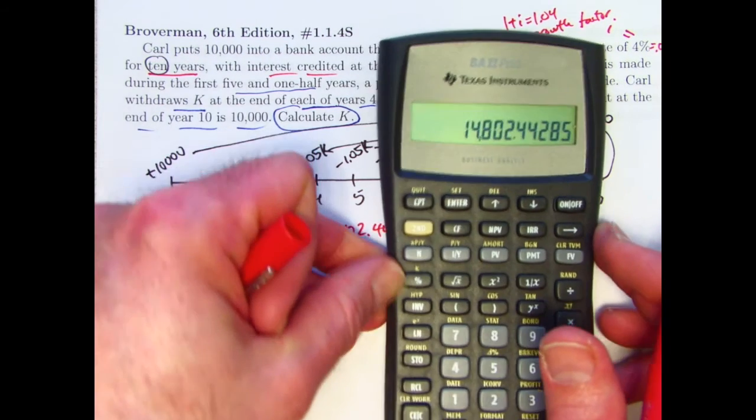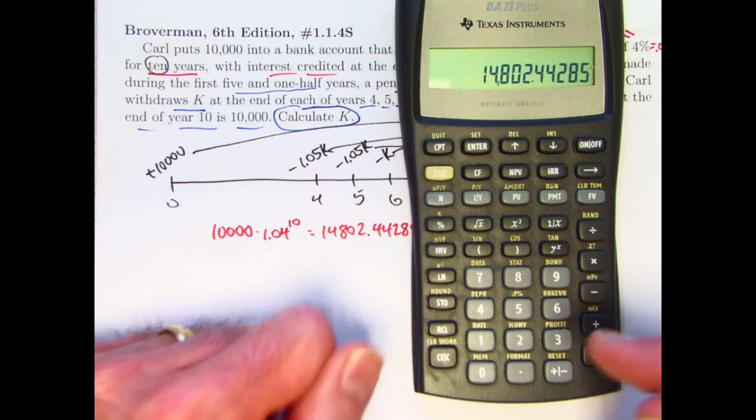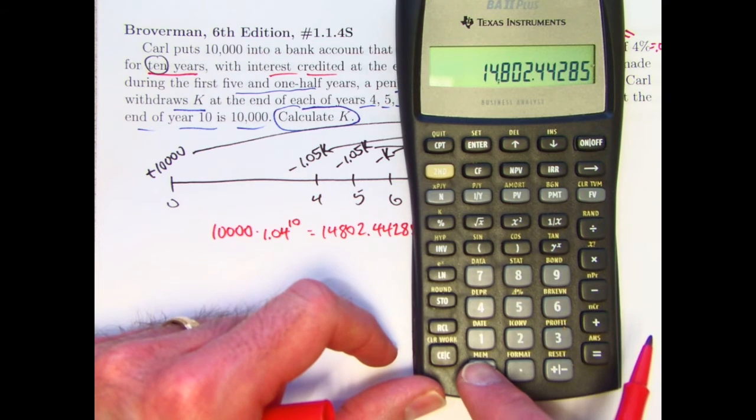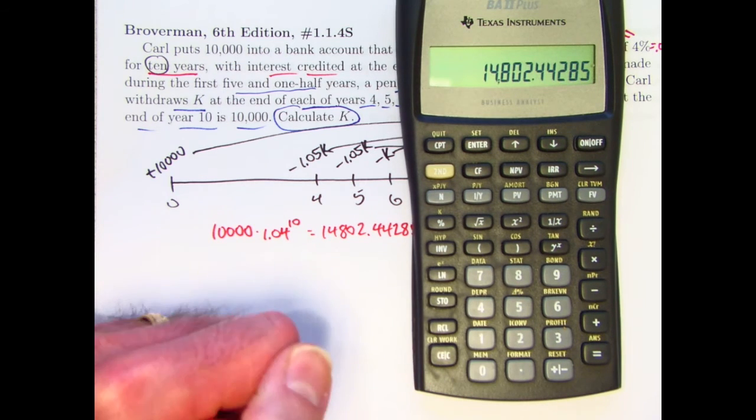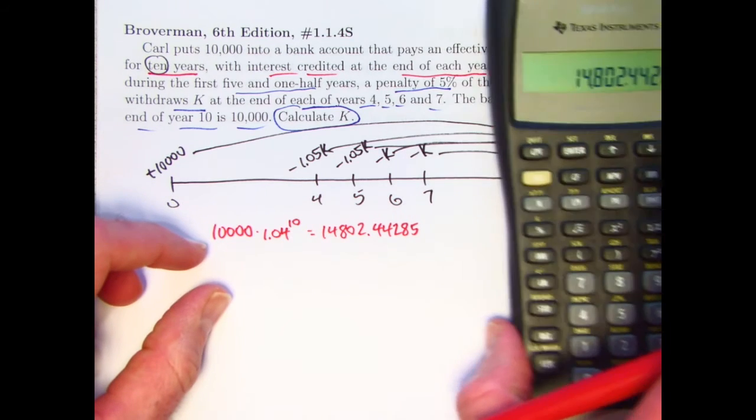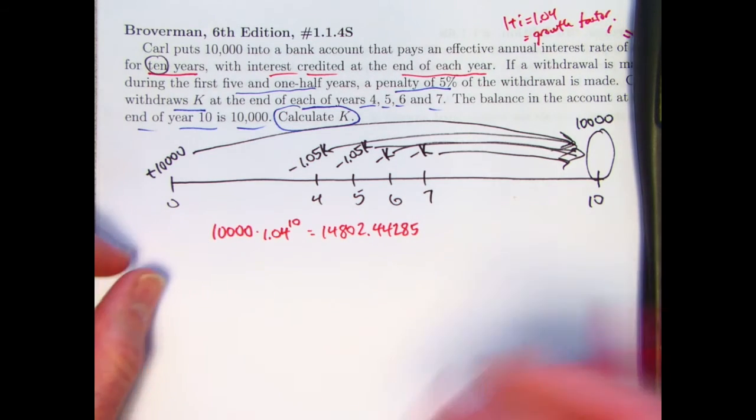And let me go ahead and store that value in the calculator's memory here. If I press STO and then zero, I have stored that value in the memory register labeled with a zero. All right.